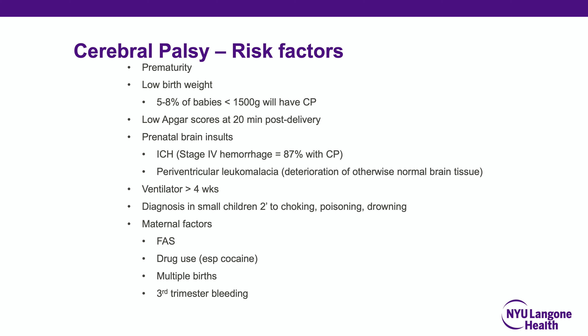Often periventricular leukomalacia, which is deterioration of normal white matter, is seen on MRI. Babies on the ventilator for greater than four weeks, as well as maternal factors such as multiple births, third trimester bleeding, and drug use — especially cocaine — are also associated.